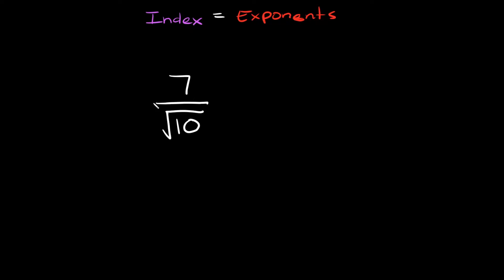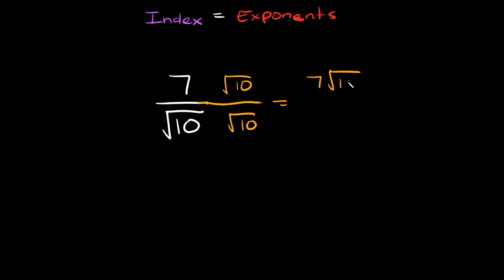So here we have 7 over the square root of 10. In order to rationalize this denominator, we just have to multiply the top and the bottom by this radical right here, by the square root. So I would multiply the top by the square root of 10 and the bottom by the square root of 10. So then on top we have 7 times the square root of 10, over the square root of 10 times the square root of 10, which is equal to just 10.